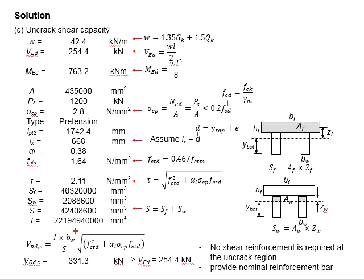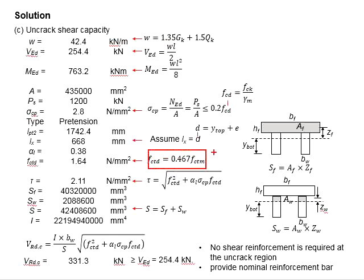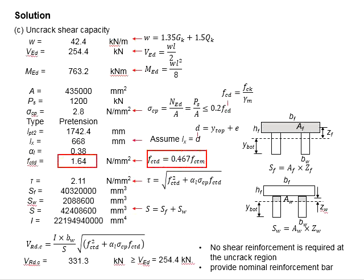Next, let us look at the parameter within the square root function. There is FCTD, the concrete design tensile strength, which can be obtained from the equation here as 0.467 times FCTM. You will need to first calculate FCTM — there is an equation for FCTM, or you may refer directly from Eurocode 2, Part 1, Table 3.1. Substituting the relevant values, FCTD is found to equal 1.64 N per mm squared.